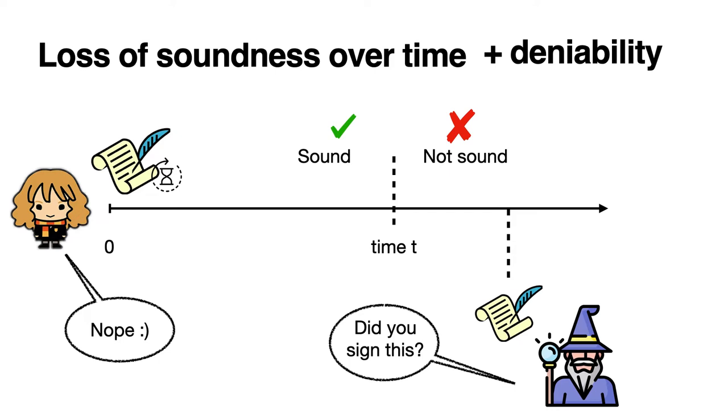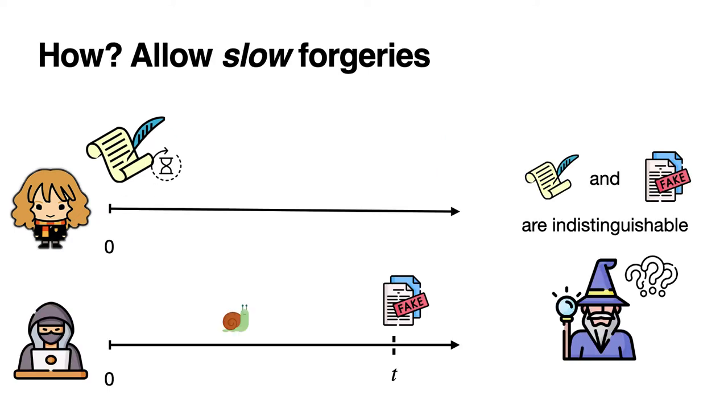So how do we achieve this? We allow signatures to be forged after some time. That is, there's a forger who can perform a slow computation that takes time t and finally produces a forgery. Alice's real signature and this forgery should be indistinguishable, and anyone should be able to create a forgery for any key and any message.